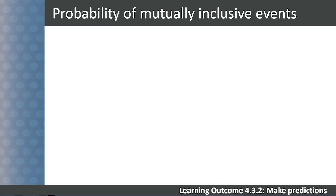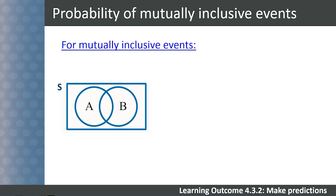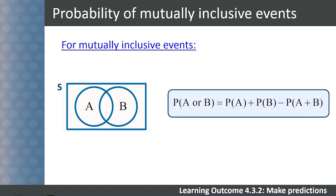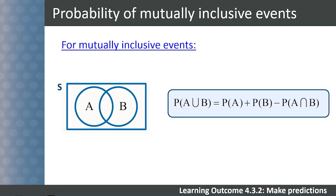Now we turn to calculating the probability of mutually inclusive events. Remember that mutually inclusive events can have an intersection. To determine the probability of two mutually inclusive events occurring, we use the formula: probability of A or B equals probability of A plus probability of B minus probability of the intersection of A and B.